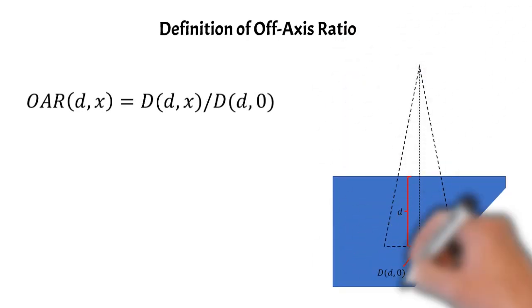And this is the geometry on the right that we're dealing with here. So you can see those two points that I mentioned before, and then you're always measuring at a depth d and off-axis distance x.